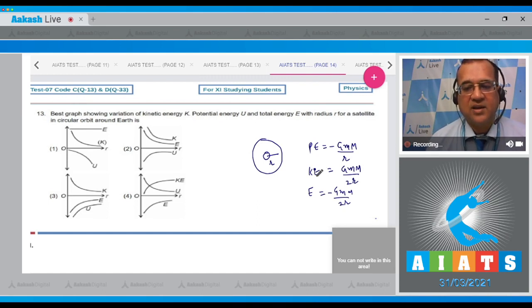Now look carefully, if I draw the graph between kinetic energy and the distance from the center, this will be a hyperbola with kinetic energy positive. But secondly look carefully, the potential energy is negative and total mechanical energy is negative, and this is just the reciprocal of each other.